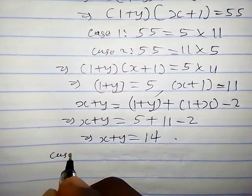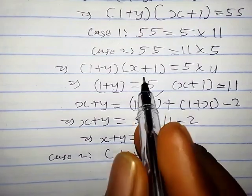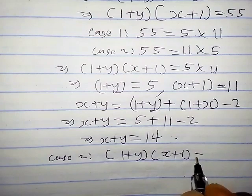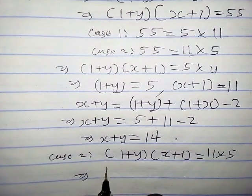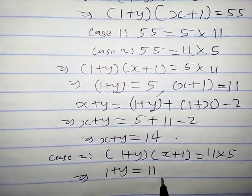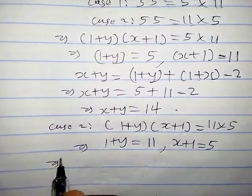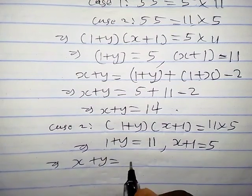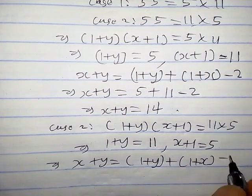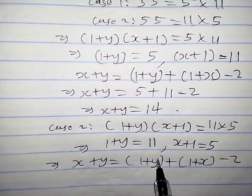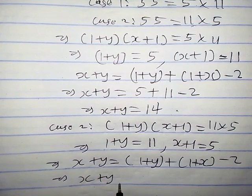For Case 2, that is the case when 1 plus y times x plus 1 equals 11 times 5. This implies that 1 plus y equals 11, and x plus 1 equals 5. So we have x plus y equals 1 plus y, plus 1 plus x, minus 2. Because when you combine those terms, you get x plus y back.